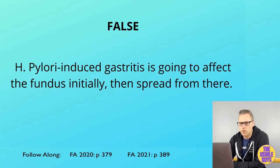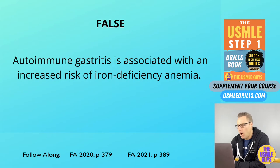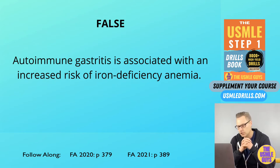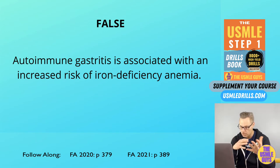True or false — this is false. An autoimmune cause of chronic gastritis will increase the risk of pernicious anemia. The pathophysiology here is the presence of autoantibodies to the hydrogen-potassium ATPase on the parietal cells and to intrinsic factor, which increases our risk of developing pernicious anemia. Anatomically, whereas H. pylori first affects the antrum, this is going to affect the fundus and body of the stomach.